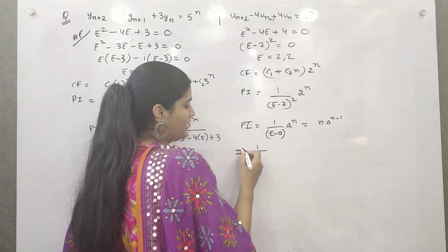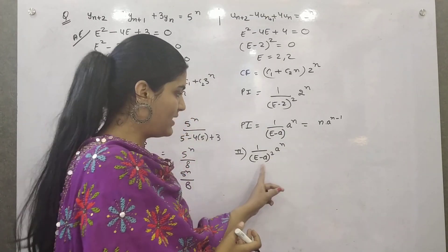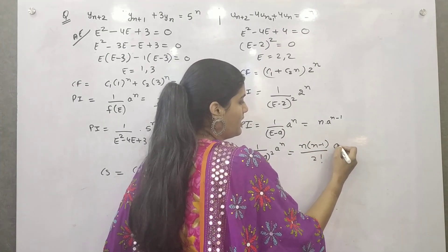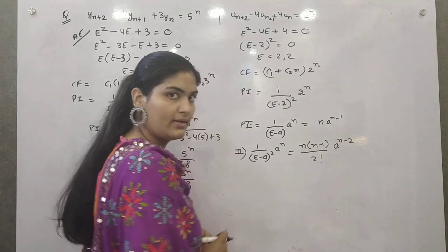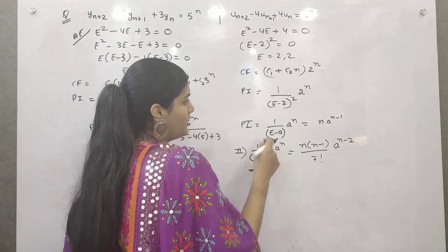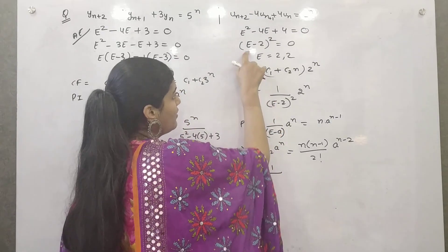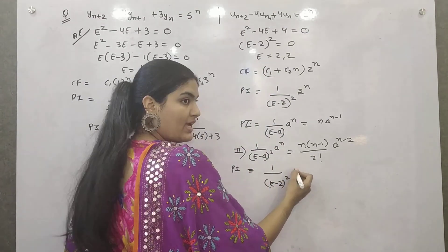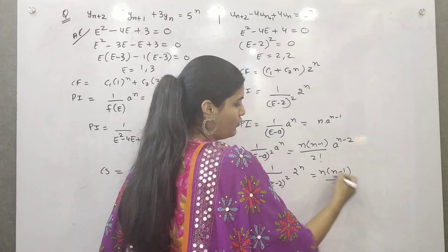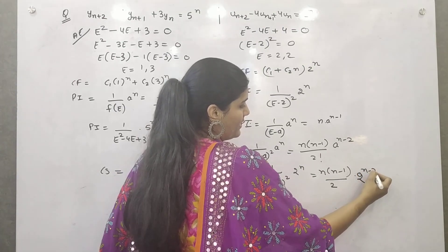And if it is the second case, if it is e minus a whole square, then also it will be a minus a equals 0. So n times n minus 1 divided by 2 factorial times a raised to power n minus 2. So if we apply this formula here, because this is similar to this, particular integral will be 1 by your equation e minus 2 square, a raised to power n is 2 raised to power n, n times n minus 1, 2 factorial which is 2 into 1 equals 2, 2 raised to power n minus 2.